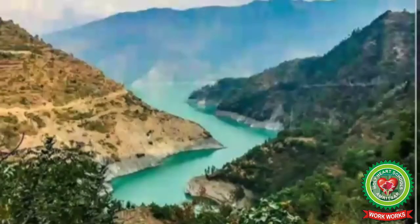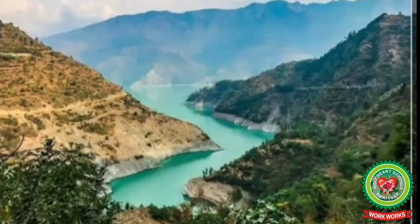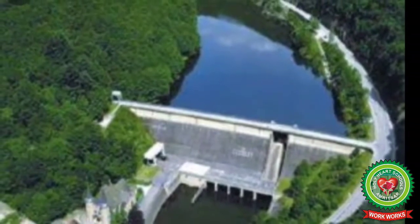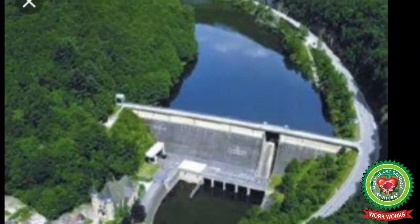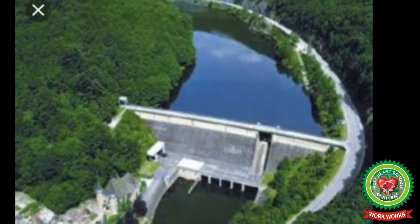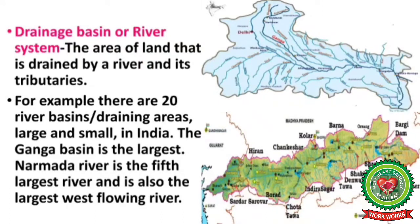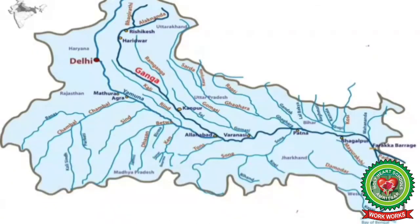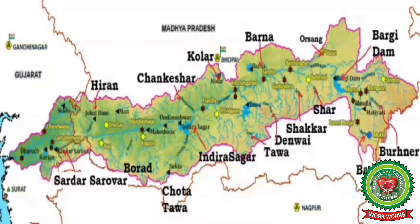Some of the best valleys in India are the Chamba Valley, Damodar Valley, Narmada Valley, and Satluj Valley — these are a heaven for nature lovers and trekkers. Drainage basin or river system is the area of land drained by a river and its tributaries. There are 20 river basins in India; the Ganga basin is the largest, and the Narmada is the fifth largest river and the largest west-flowing river of peninsular India.